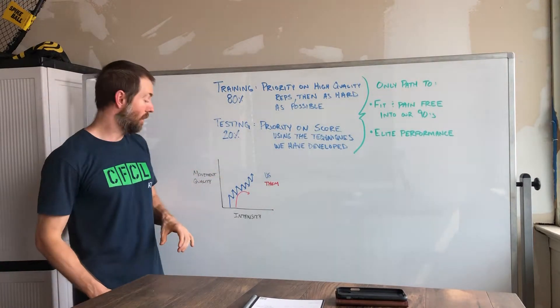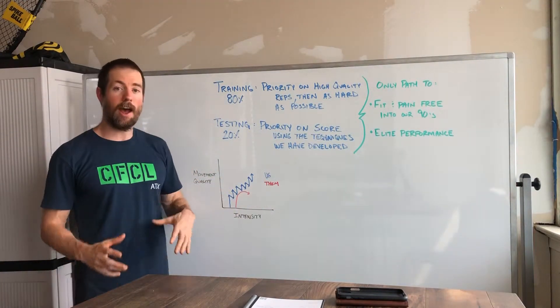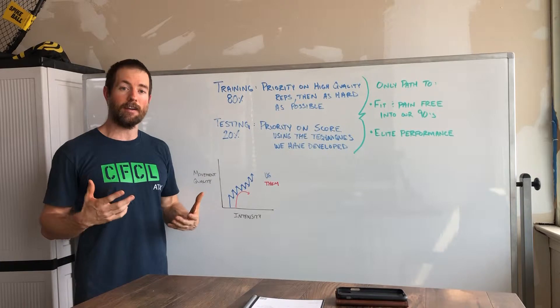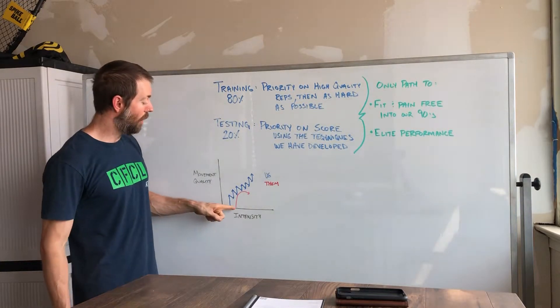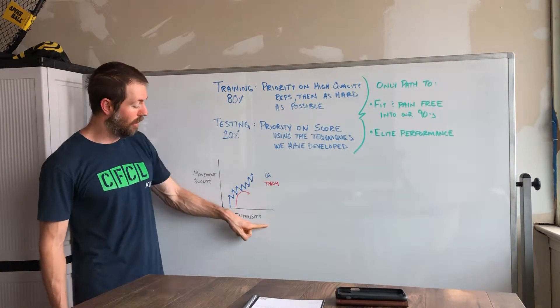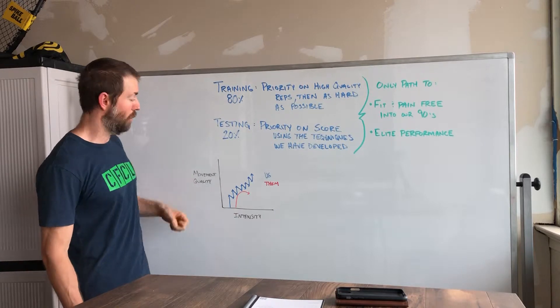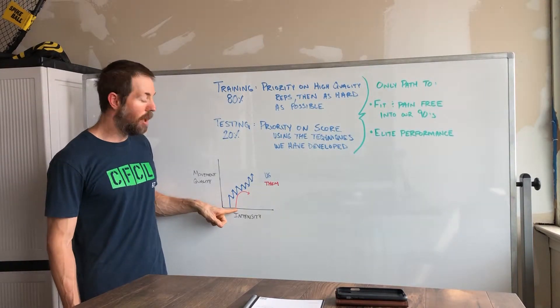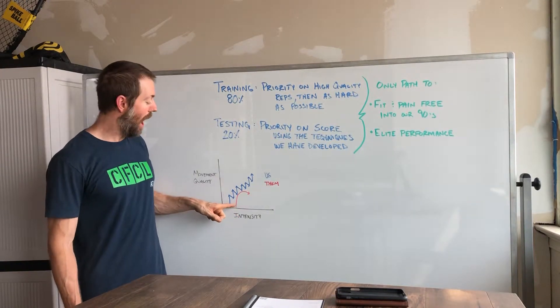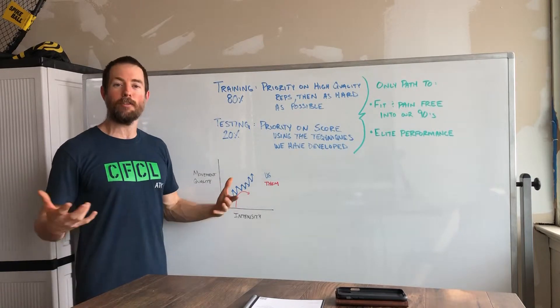So what does this look like? First, we'll look at how a lot of other people handle high-intensity exercise. They start off—we have intensity here at the bottom and we have movement quality here. They start off at an intensity, and then as they go, they get better and better at the movements. Their technique gets better and better.